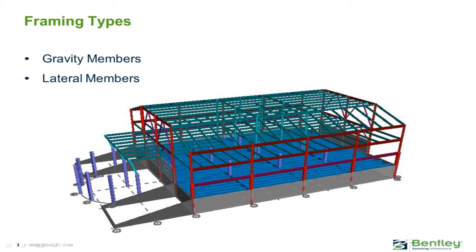In RAM Structural System, it is very important that when you're modeling your lateral frame members, you provide a complete load path for those lateral members from the top of your structure all the way down. On this particular slide, we have lateral members indicated in red or purple, and lateral members are only supporting other lateral members. For example, a lateral beam member must be supported by a lateral column or another lateral beam — it cannot be supported by a gravity member.